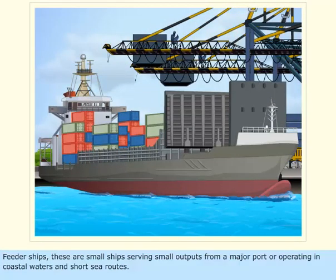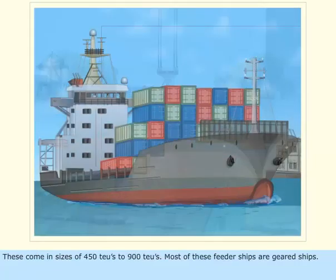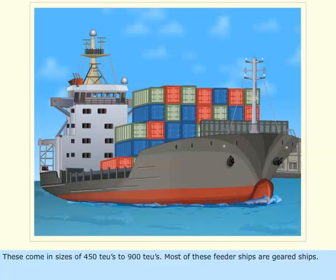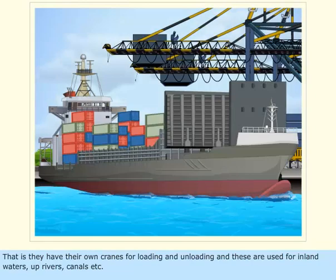These are small ships serving small ports from a major port or operating in coastal waters and short sea routes. They come in sizes of 450 TEUs to 900 TEUs. Most of these feeder ships are geared ships — that is, they have their own cranes for loading and unloading — and are used for inland waters, up rivers, canals, etc.